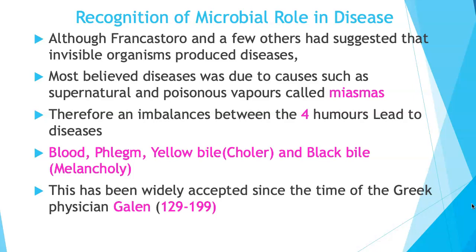In the past, people knew diseases existed but how they were transmitted was still unknown. Although Fracastoro and a few others had made suggestions that invisible organisms produce diseases, most still believed they were caused by supernatural and poisonous vapors called miasma.